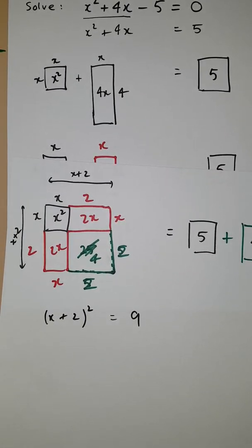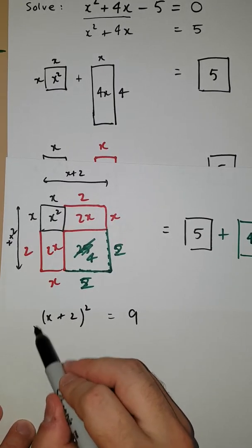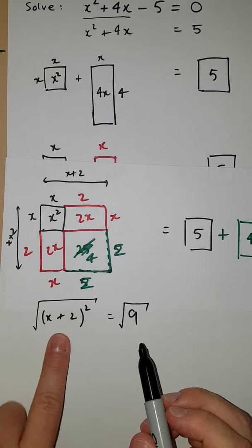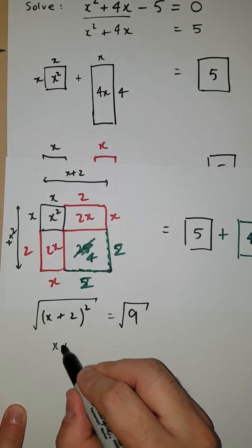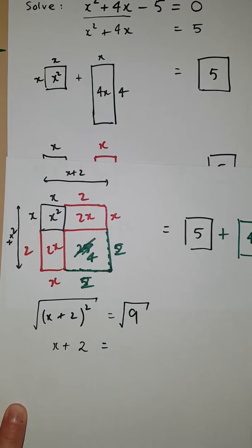Now to solve this equation, we need to reverse the square operation here. We do that by taking a square root of both sides. On the left-hand side, this leaves us with x + 2. And on the right, we end up with ±3.